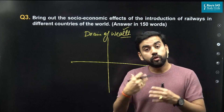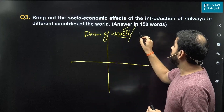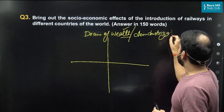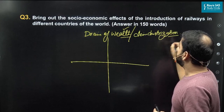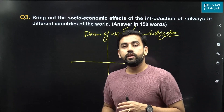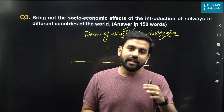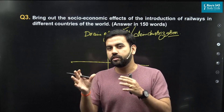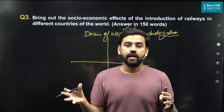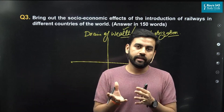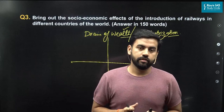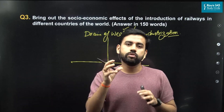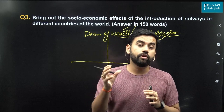This drain of wealth also further led to the concept of de-industrialization. This de-industrialization called for the death of traditional industries, because railways supported some specific sectors like coal, iron, and steel, and largely neglected other traditional sectors — for example, agriculture. Even in agriculture, only cotton was the most important good that was the prime focus of the colonizers.